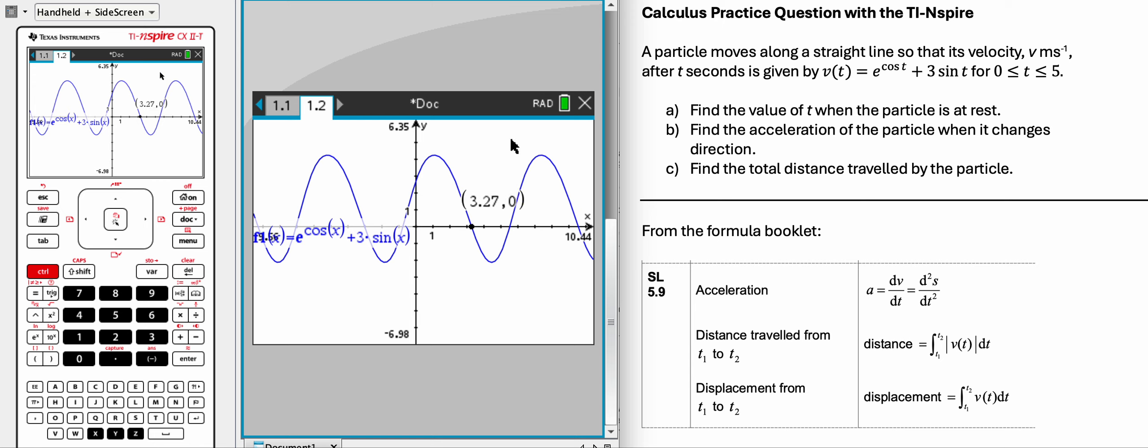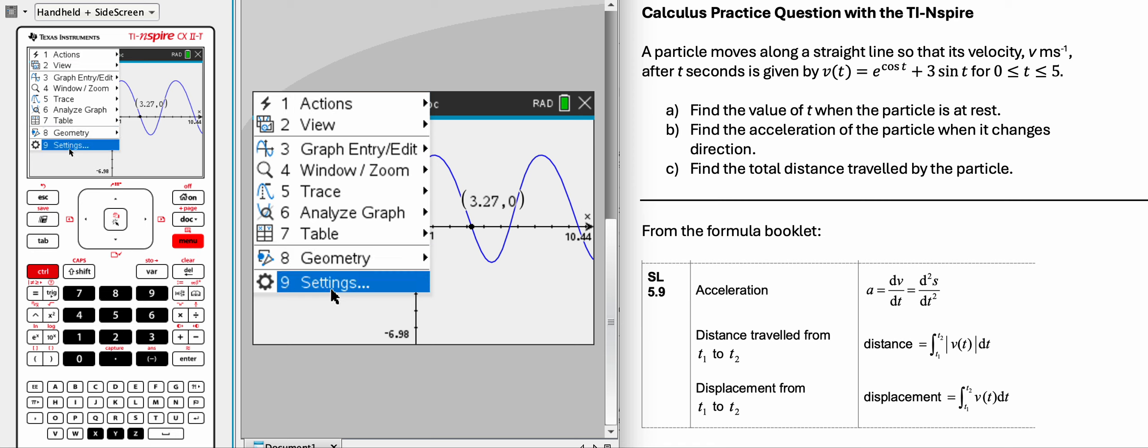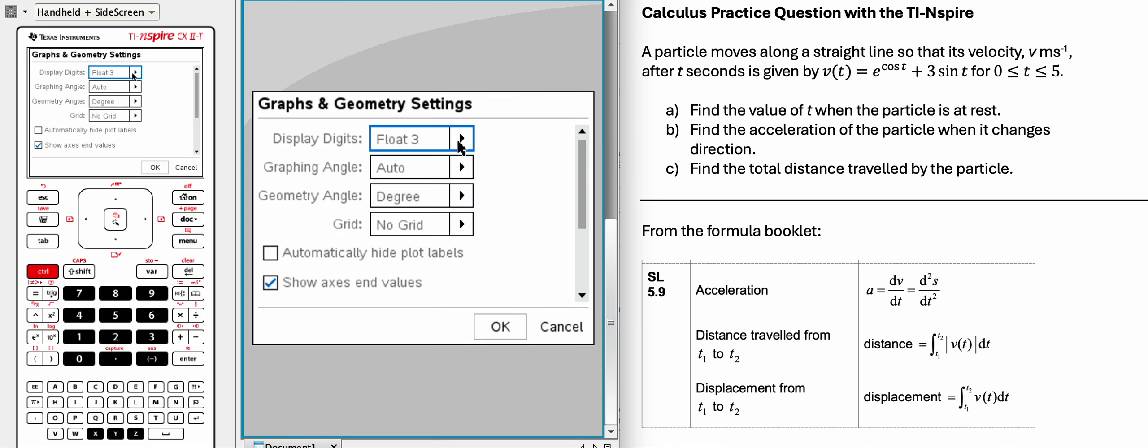Now, because the IB wants you to have it to three significant figures, this would be rounded correctly, but you may need to use that number later, and you might want more digits of that.